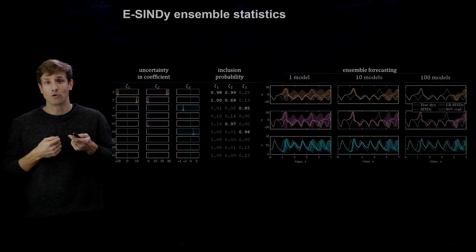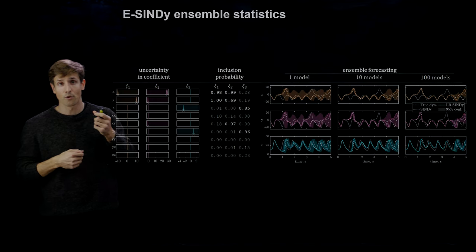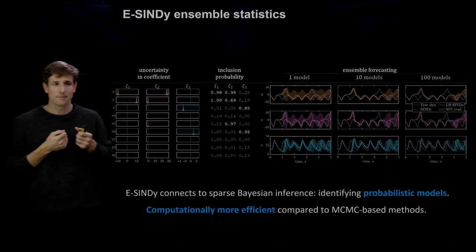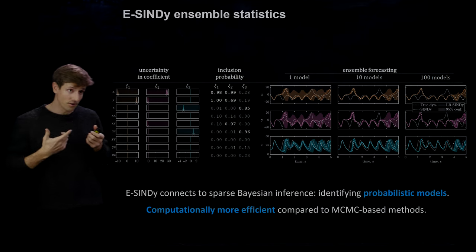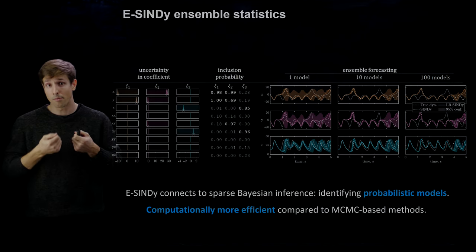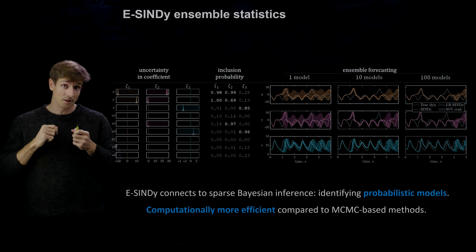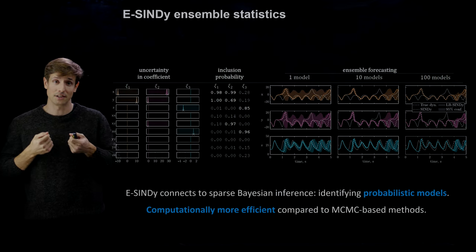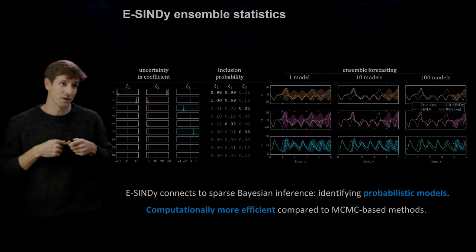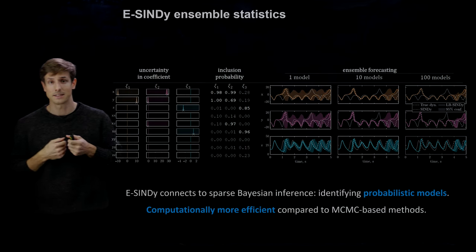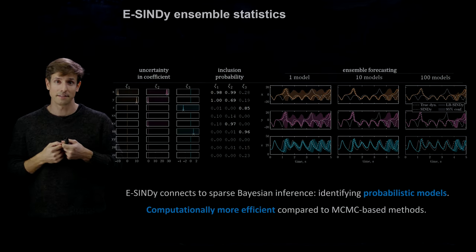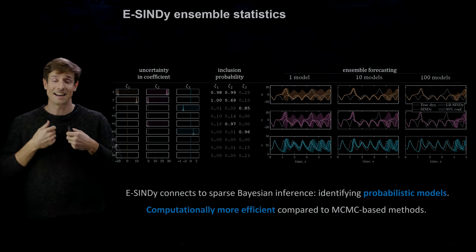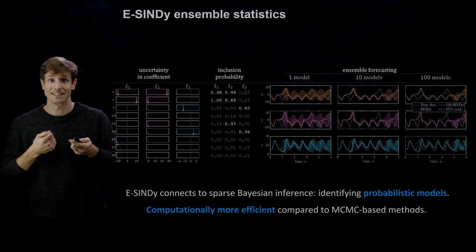With these inclusion probabilities we can run ensemble forecasts that provide confidence intervals. Our eSINDy method connects to sparse variational inference as it identifies probabilistic models. The great advantage is that it is extremely computationally efficient — compared to Markov chain Monte Carlo based methods that can easily take several hours to identify a SINDy model, our eSINDy method can identify probabilistic models within seconds.